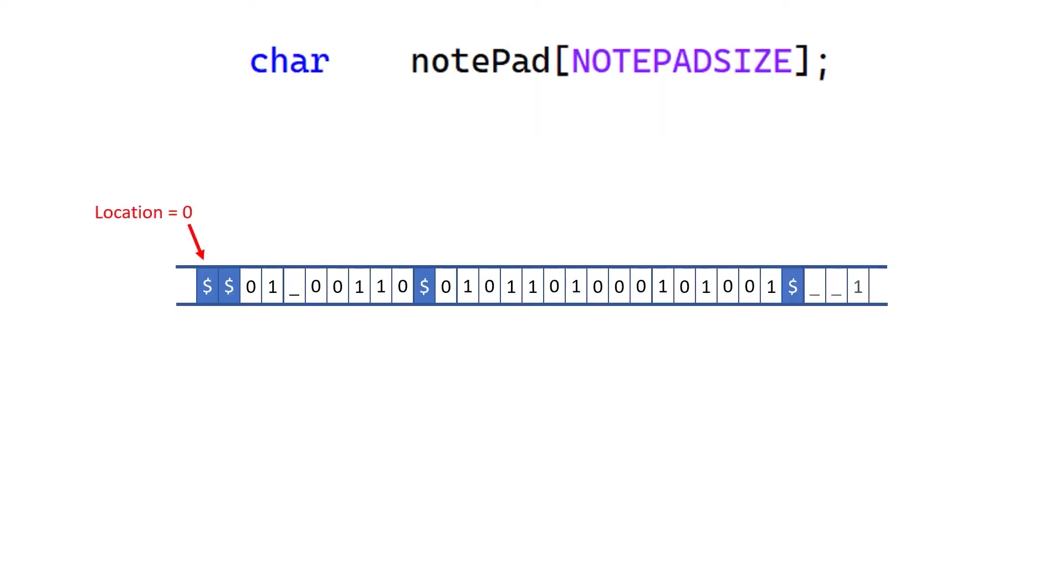Starting at location zero on the left, let's say this just happens to be the data stored on the notepad. I've put the dollar symbol on a blue background, but that's just to make things a bit clearer. In reality, it's just another symbol. I get to control what's on the notepad, so I'm going to use these double dollar symbols on the far left to indicate the start of the tape.